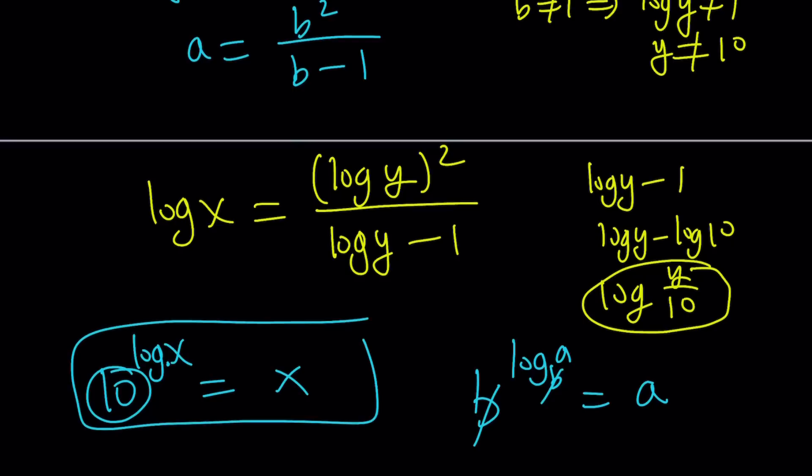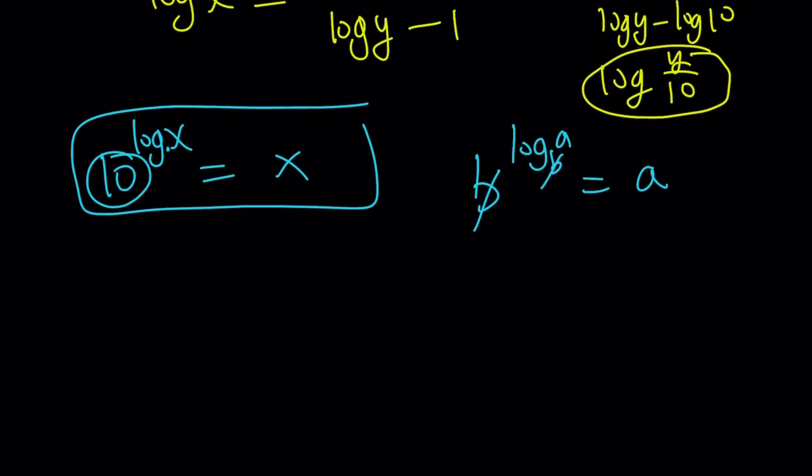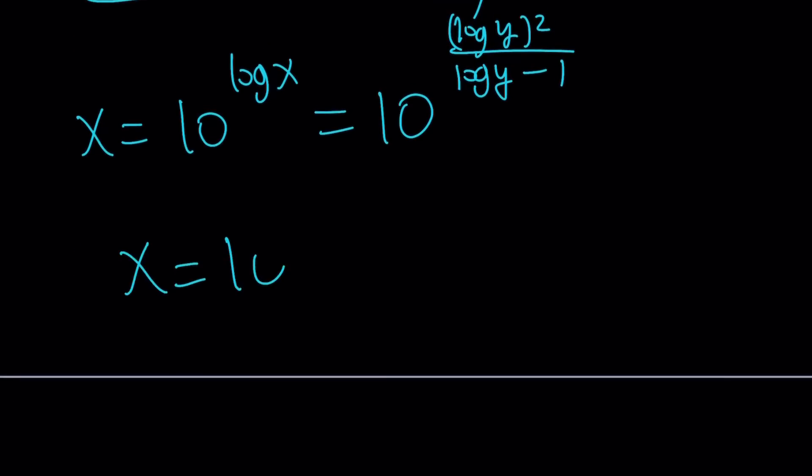Using this identity, we can do 10 to the power both sides here. So it's going to look like x equals 10 to the power log x, which is 10 to the power log y squared divided by log y minus 1. Awesome. Forget about the 10 to the log x and you can write x directly as 10 to the power log y squared divided by log y minus 1. Awesome.